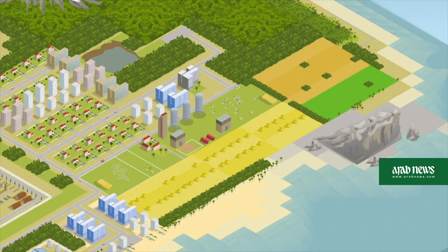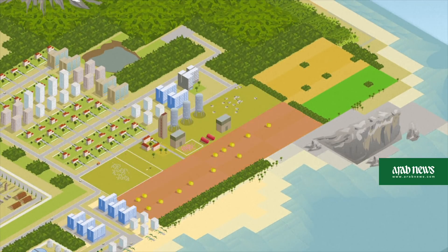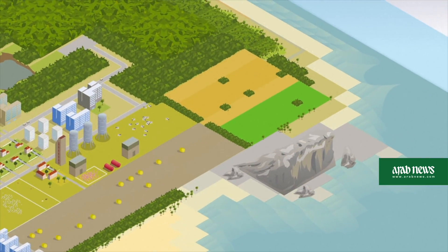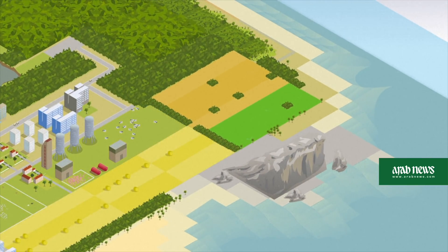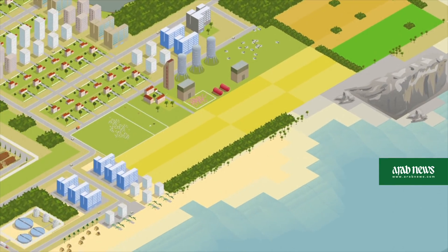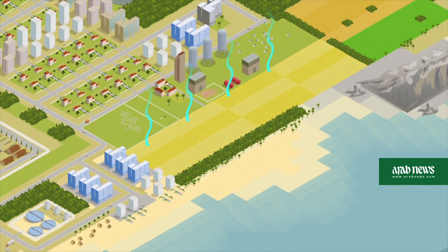Drought conditions are aggravated by the planting of unsuitable crops like corn, which require intensive irrigation. Certain agricultural techniques like monoculture over very large areas can also negatively affect the environmental equilibrium by bringing about rapid evaporation.